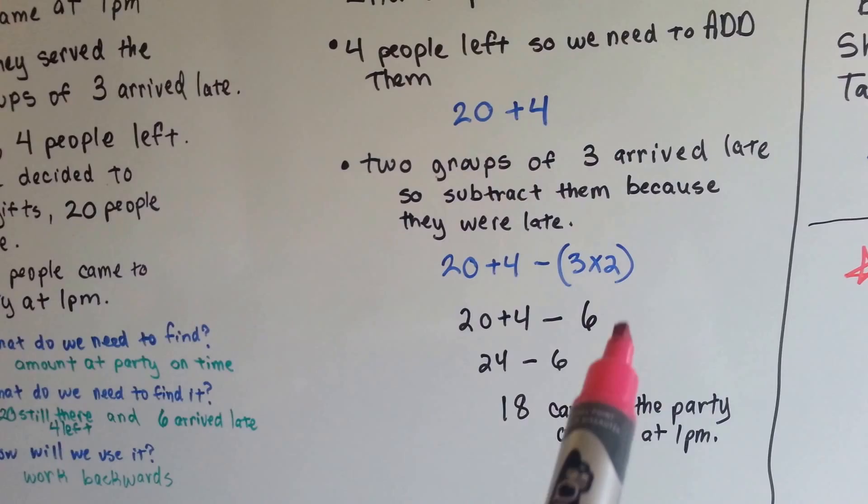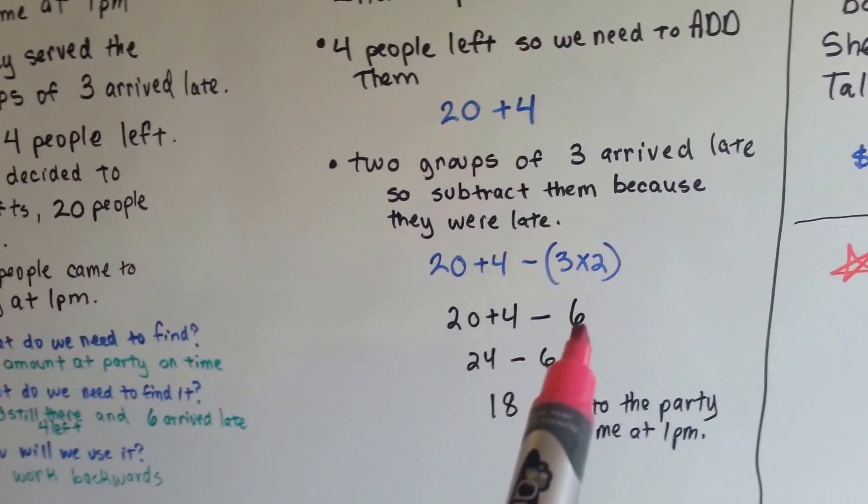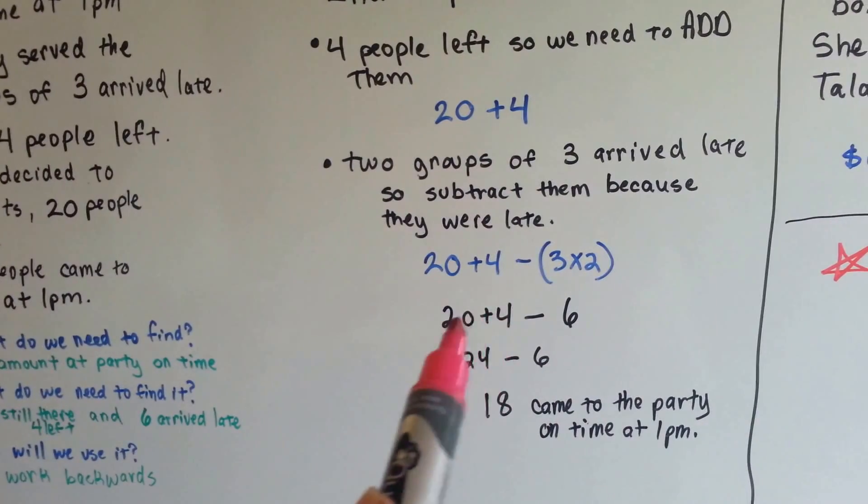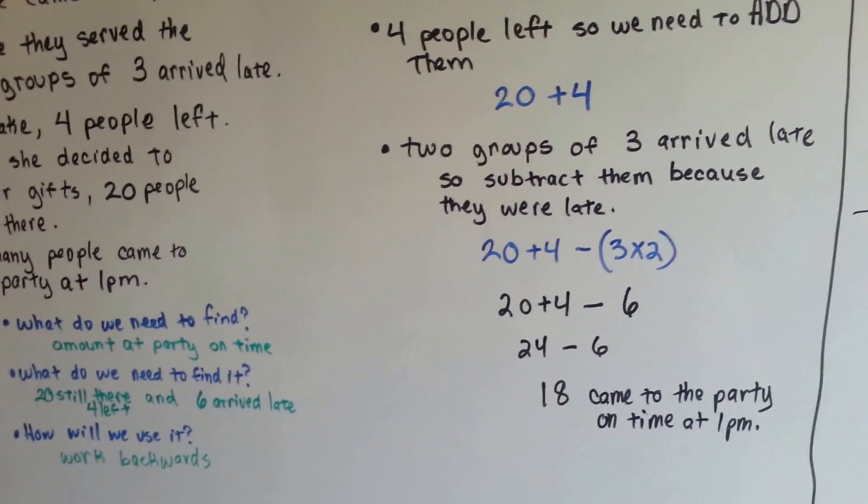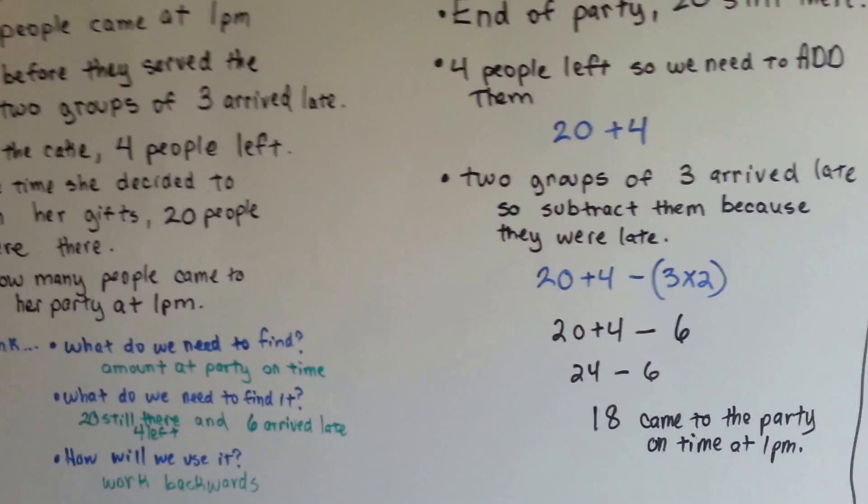So now we're going to do in parentheses first. We've got 20 plus 4 minus 6. We add, and we get 24. We subtract the 6, so 18 came to the party on time at 1pm.